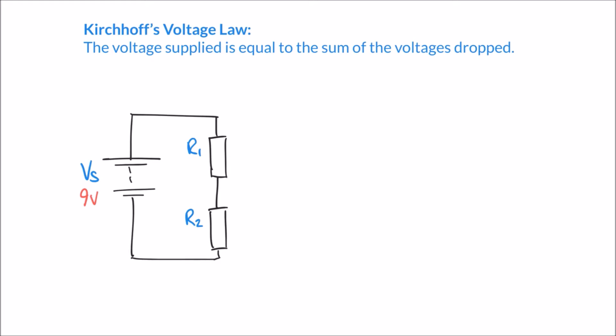Before we do that, I want to look at the wording of Kirchhoff's voltage law. It states that the voltage supplied is equal to the sum of the voltages dropped. By 'sum' we mean the total — so the total of the voltages used in the circuit. In this case, nine volts should equal the total of the voltages dropped across the resistors. In formula form: Vs = V1 + V2.